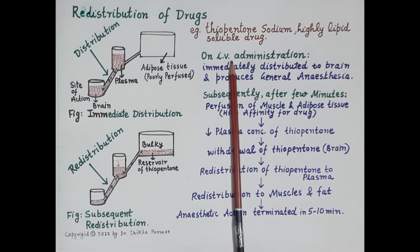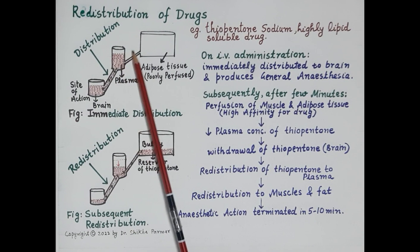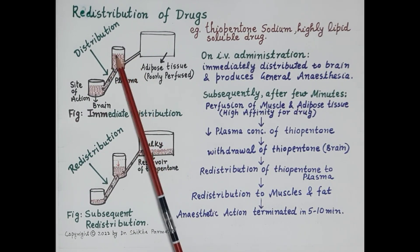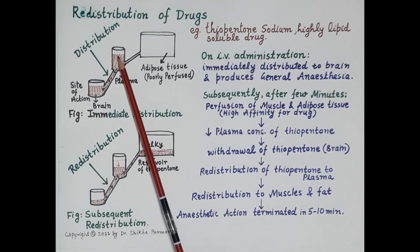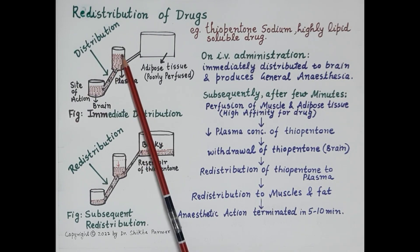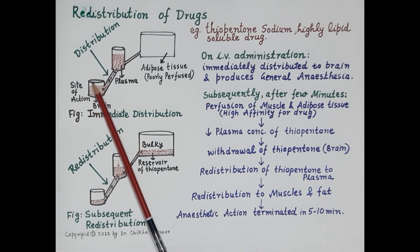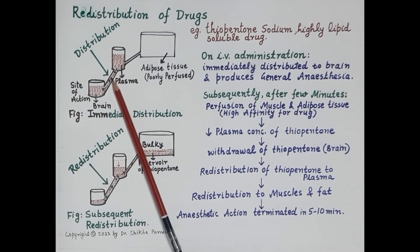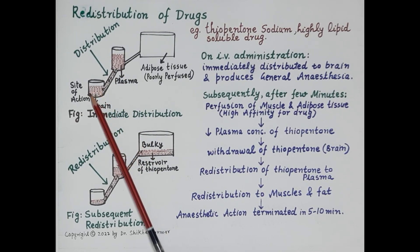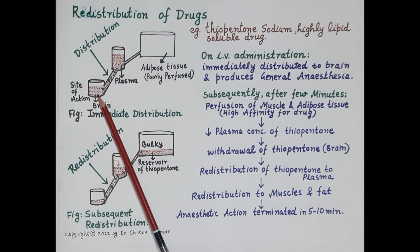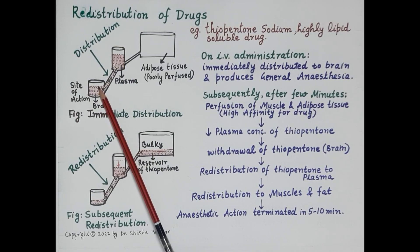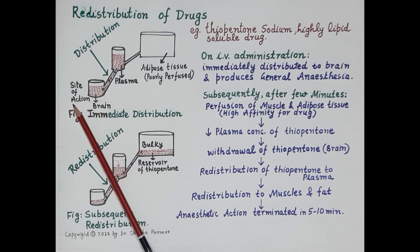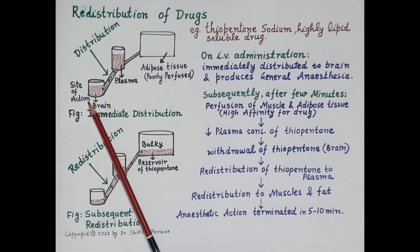Thiopentone sodium is administered by the intravenous route, meaning it is injected directly into the blood. The concentration of drug in the plasma is shown in red. Since the brain is a highly perfused organ, thiopentone sodium is immediately distributed to the brain — its concentration there is shown in red. An equilibrium is established between the concentration of drug in the plasma and in the brain. As soon as thiopentone sodium reaches the brain, it immediately produces general anesthesia, since the brain is its site of action.